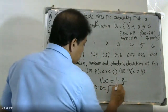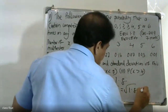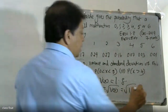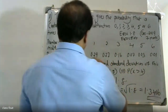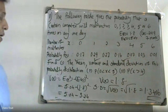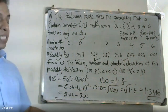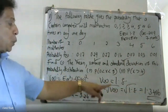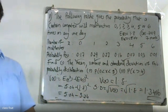The standard deviation is the square root of the variance of x, which equals the square root of 1.8, which is approximately 1.3416.